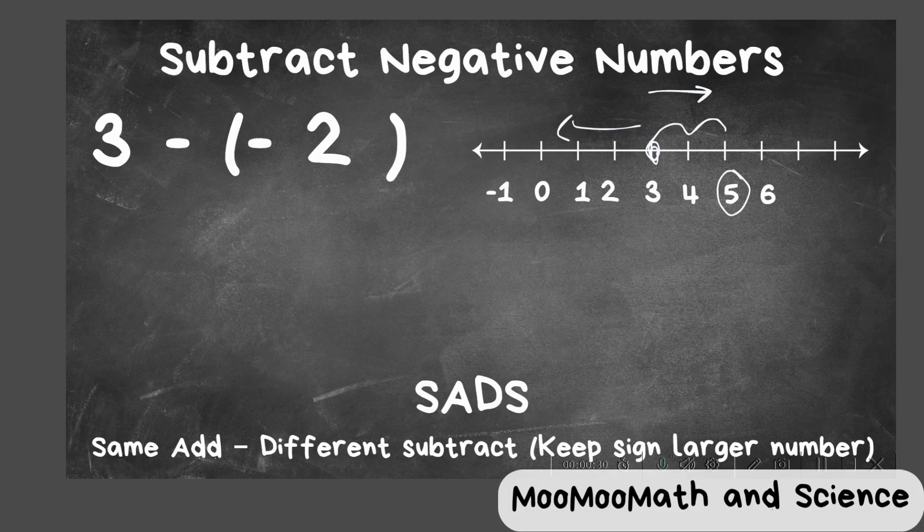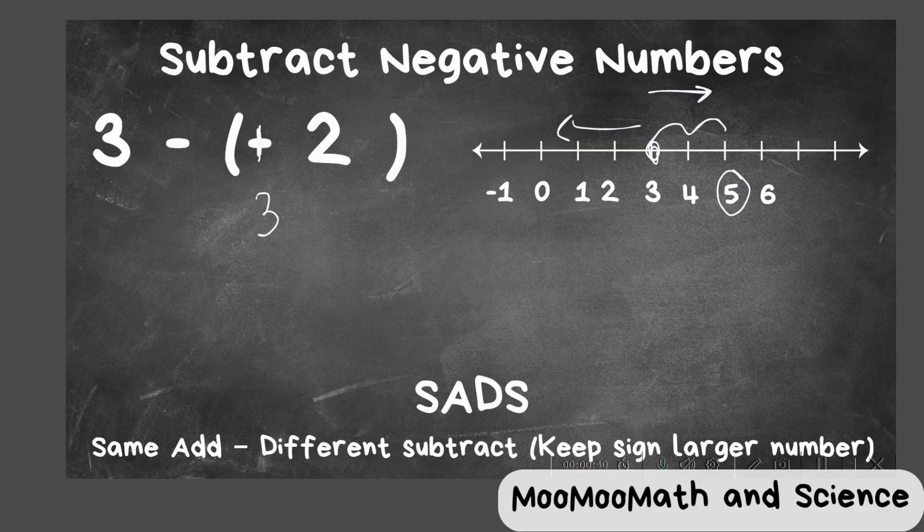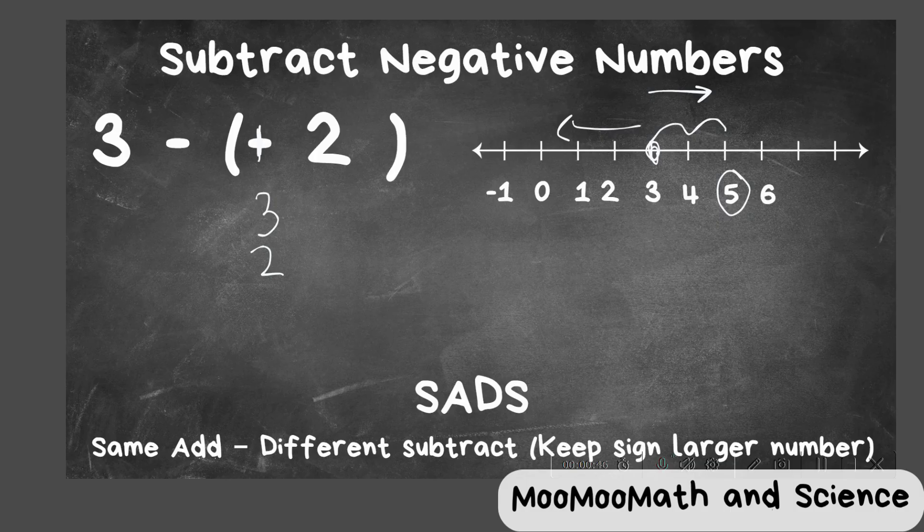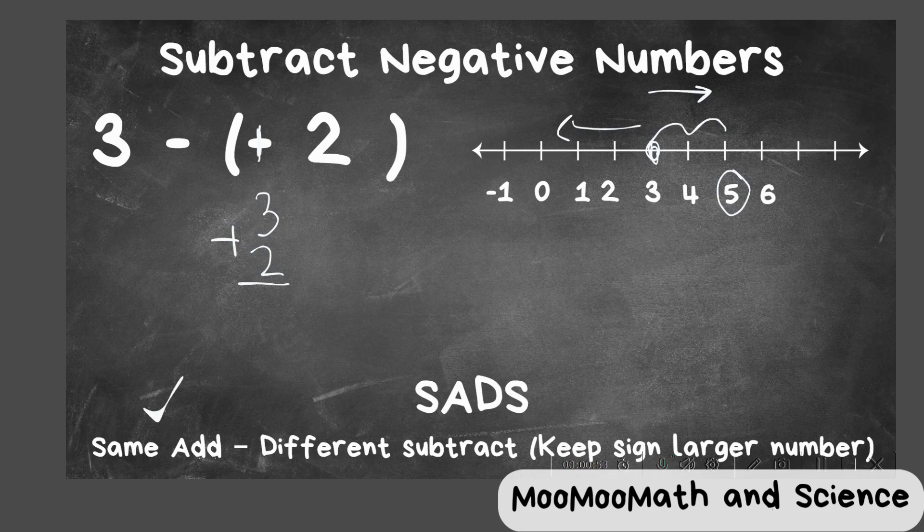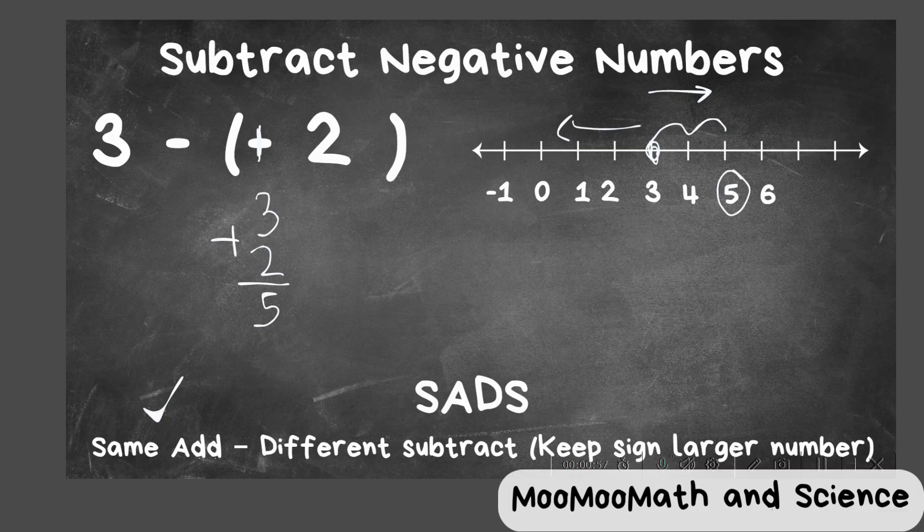So let's now use SADS and see if we can get the same answer. Remember, anytime you have minus a negative, we're going to convert this to a positive. Now we have a positive 3 and a positive 2, so I'm going to place 3 over 2 because it's larger. And now we have same signs, so we will add. That becomes 5, and you keep the same sign, which is positive.